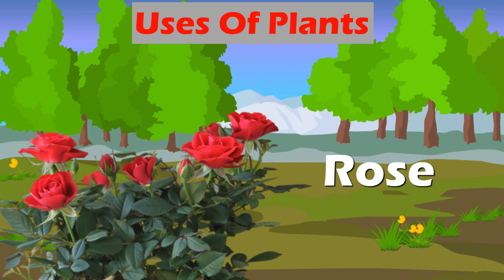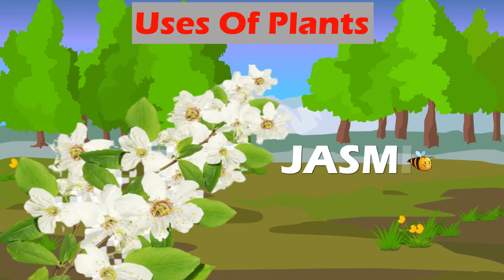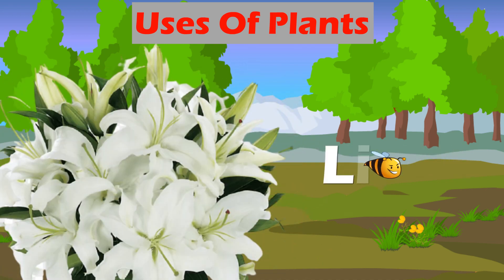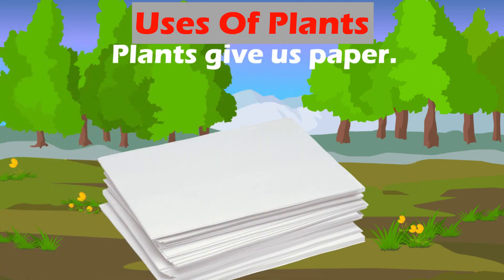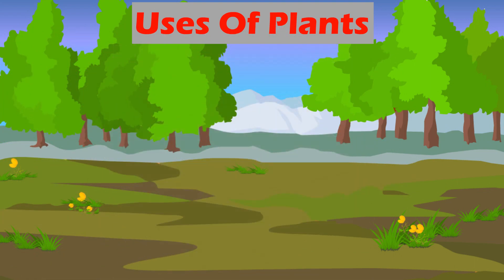Plants give us perfume, like Rose, Jasmine, and Lily. Plants also give us paper, like Bamboo.